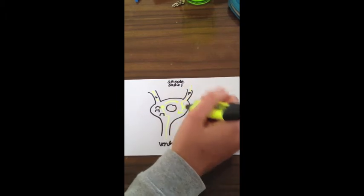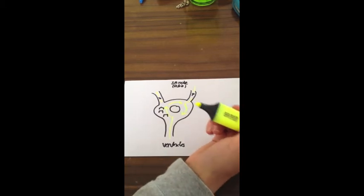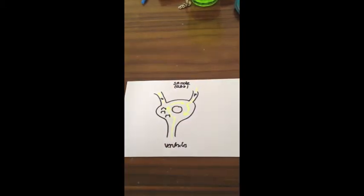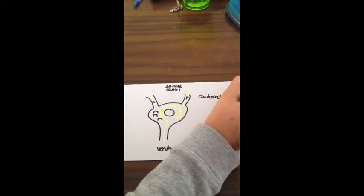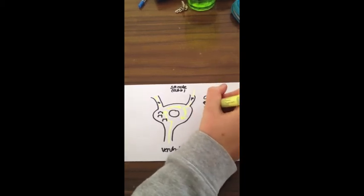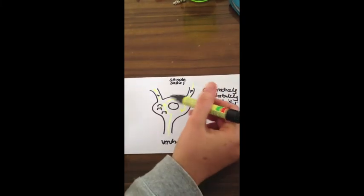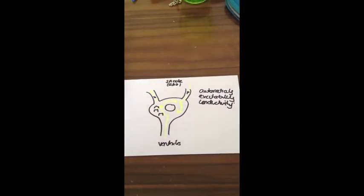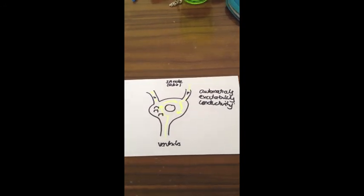It's difficult to understand how this re-entry circuit occurs without understanding the properties of cardiac tissue. The ones that relate most to this are automaticity, excitability, and conductivity. Essentially the tissue is extremely irritable and will conduct any electrical signal it possibly can within the relative refractory period.